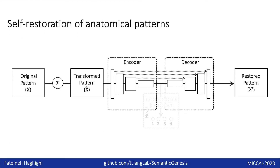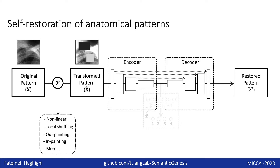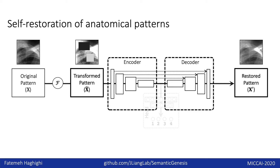The last component is self-restoration, which is a simple image restoration task. Given an anatomical pattern, we first deform it and then feed it to the model to restore the original pattern. We adopt the VNet structure, which is an encoder-decoder architecture with skip connections in between. The input is the deformed anatomical pattern and ground truth is the original anatomical pattern. By restoring anatomical patterns from various image transformations, the model learns from multiple perspectives, for example, texture, boundary, and local continuity.